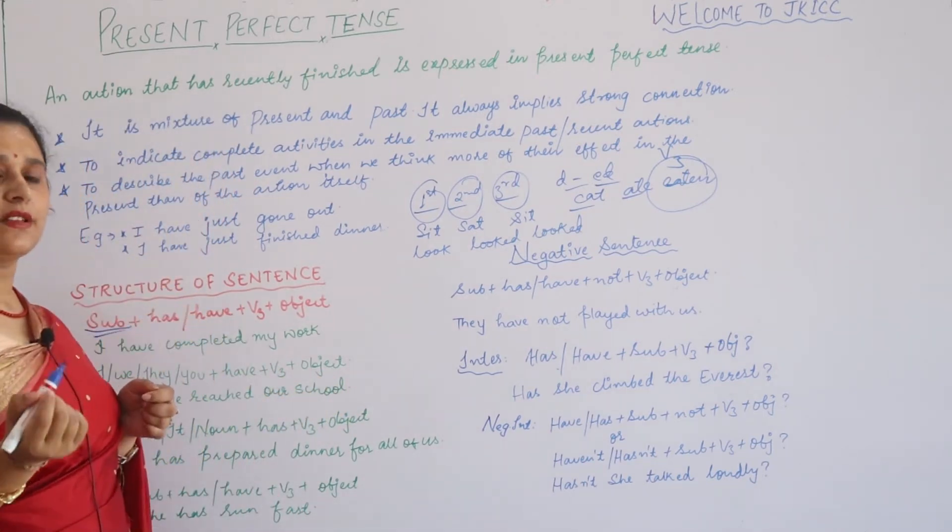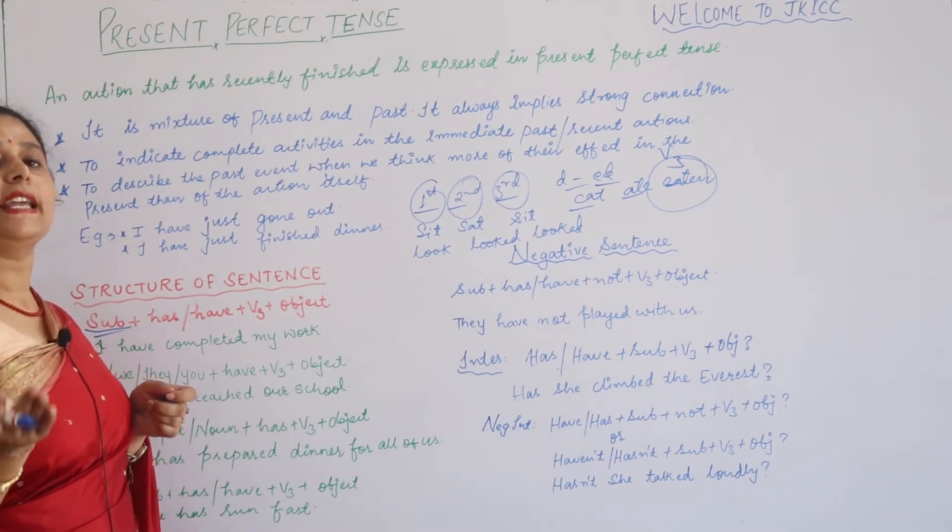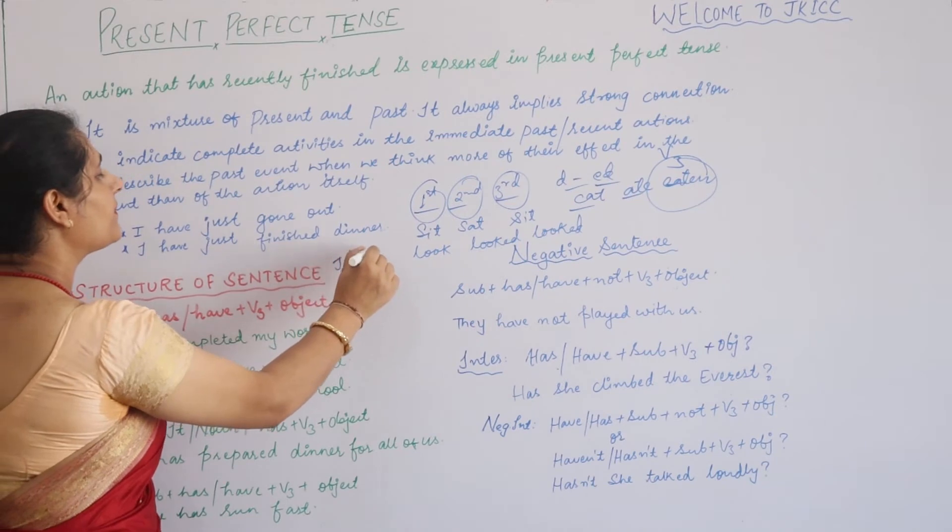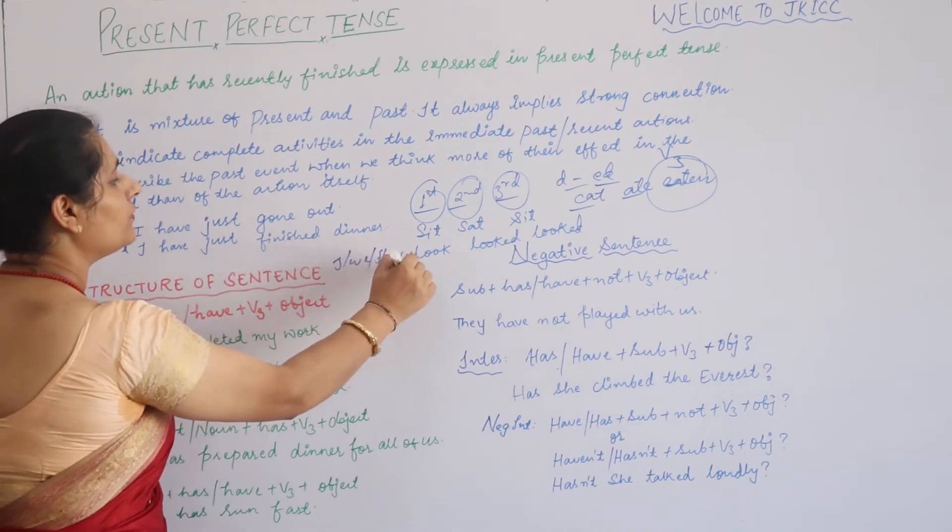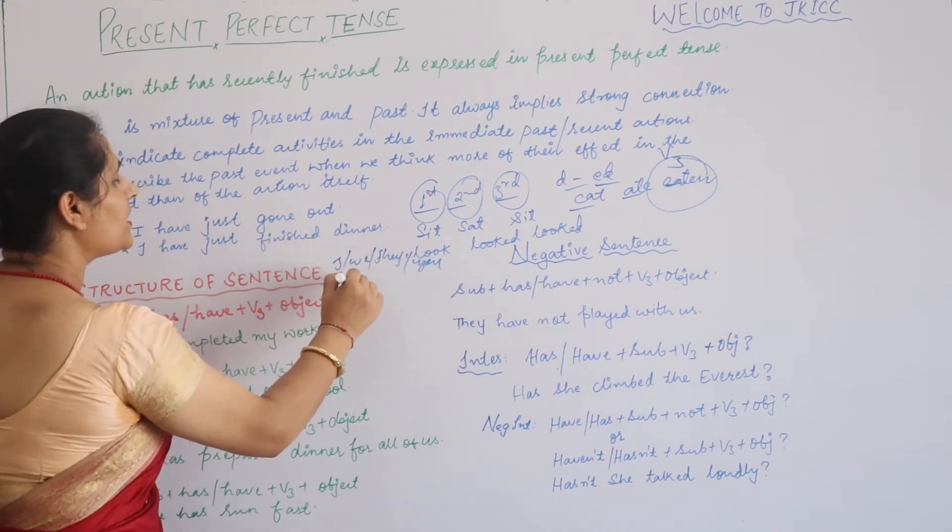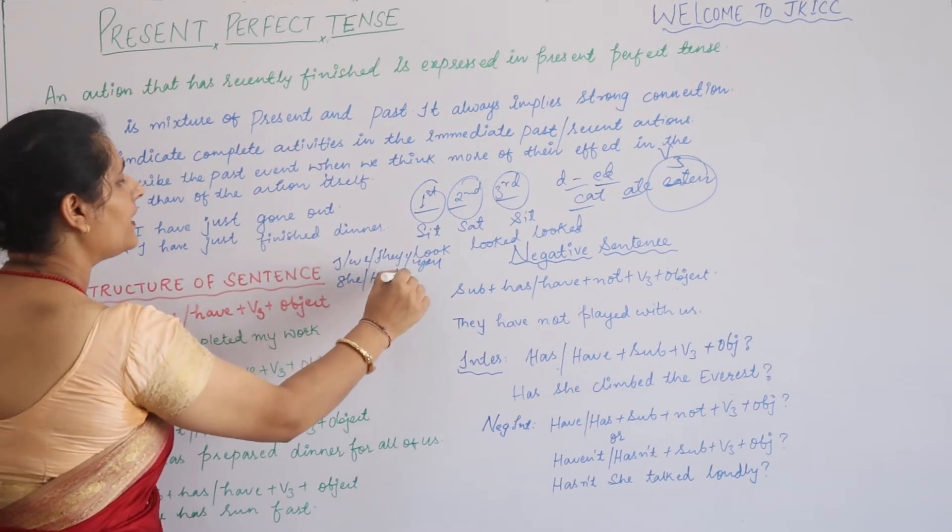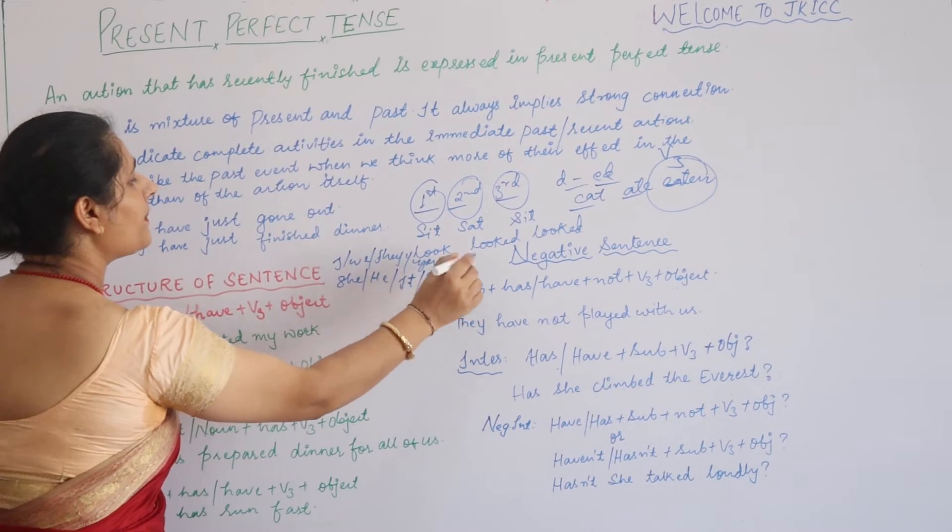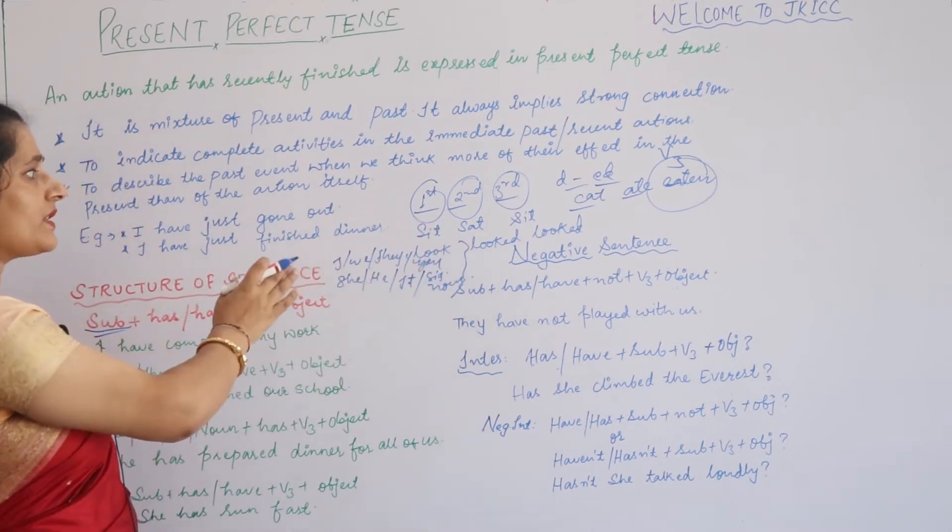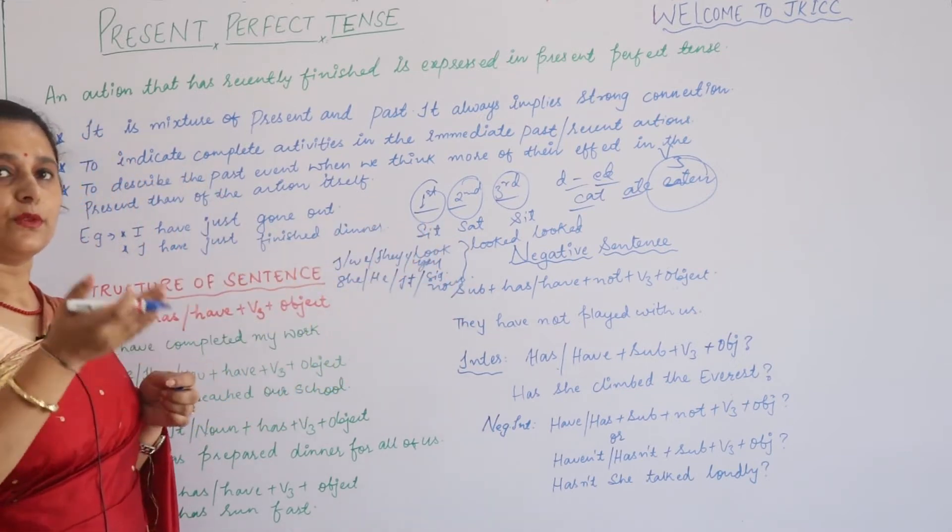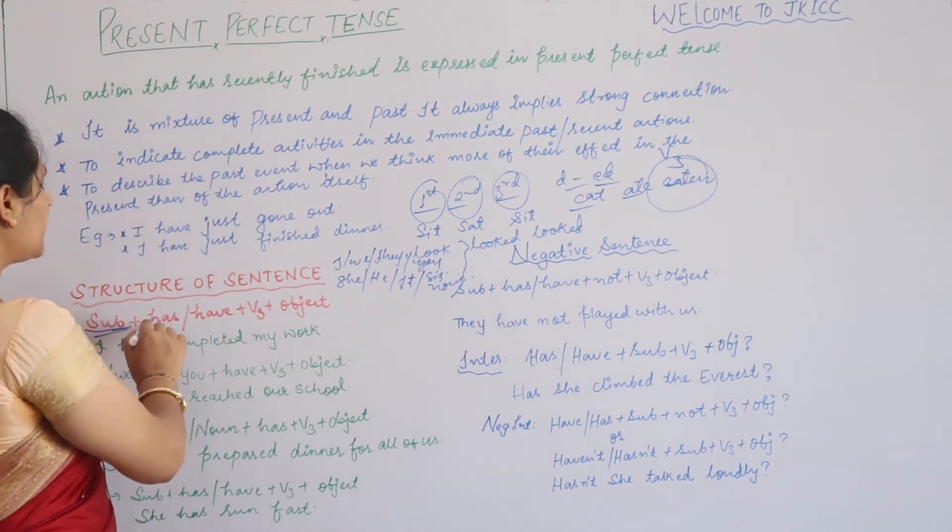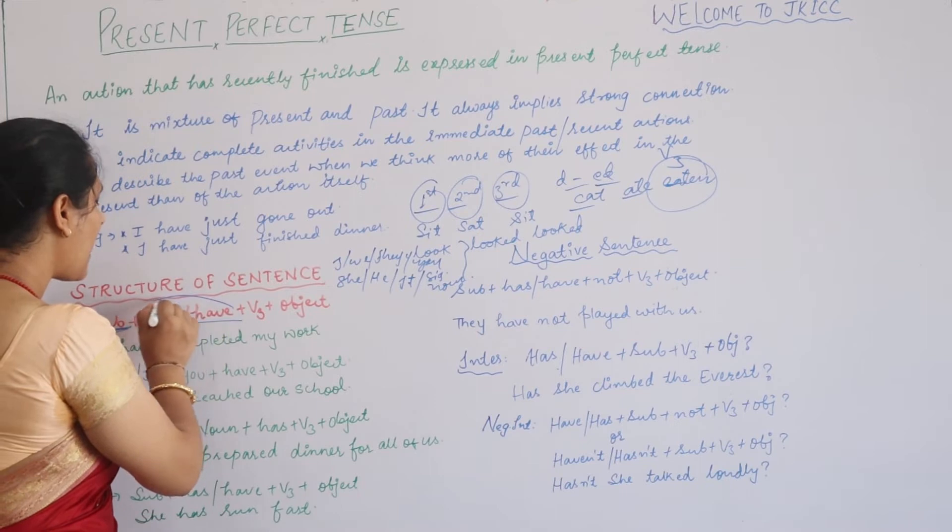First of all, we need subject, which I have told you broadly eight types: I, we, they, you, she, he, it, and singular nouns. I am not adding plural nouns here. You will put the auxiliary verb in plural. That is not that important. Subject plus has or have.